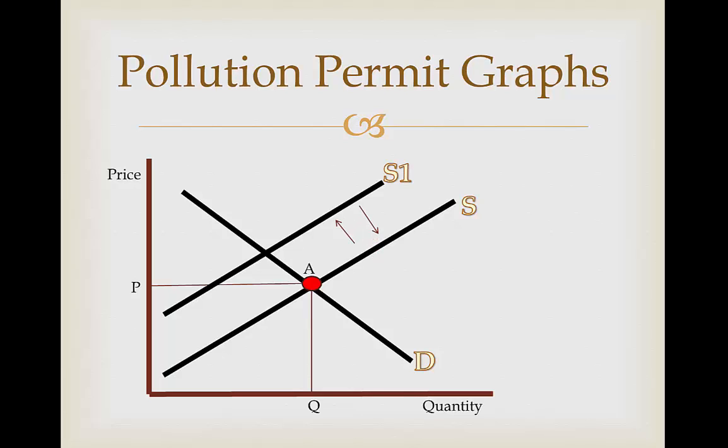People who are given a pollution permit can buy more off others. Originally supply had shifted from S to S1, but since they're buying more pollution permits off other polluters, it decreases back to S, where they're polluting at their regular levels once again. This is shown by a change back to S.